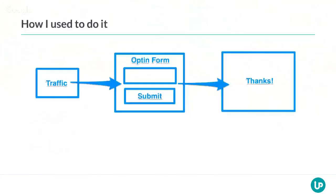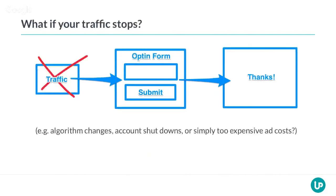Let's get started with Looping, the first secret. This is how I used to do it — I used to send traffic to an opt-in form, trying all kinds of things: a blog sidebar, webinar signup pages, or full-page lead pages. But what happens if the traffic stops? I've experienced that multiple times. As soon as the traffic stops, you won't get any leads anymore.